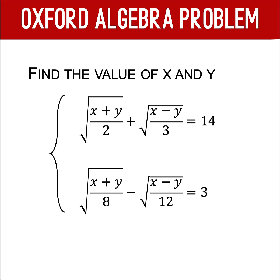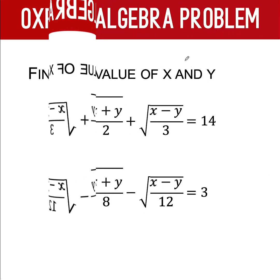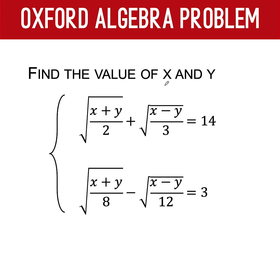Hey everyone, here's our math problem for today. This is an Oxford algebra problem. Find the value of x and y given this system of radical equations. The first equation is the square root of x plus y all over 2 plus the square root of x minus y all over 3 equals 14.